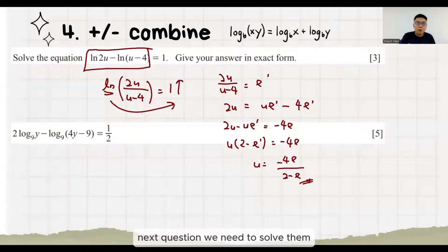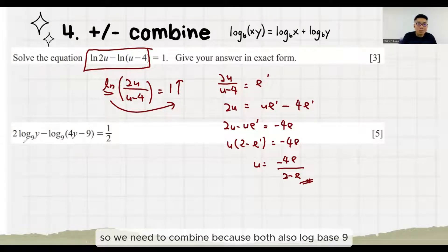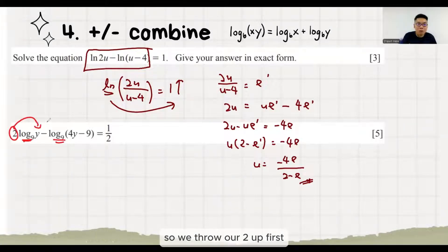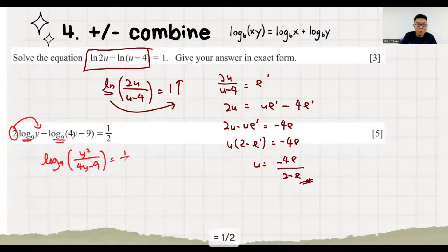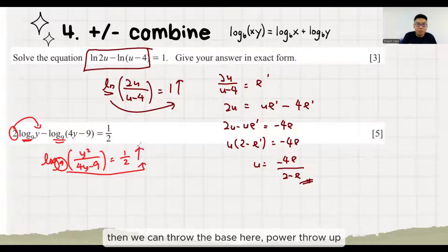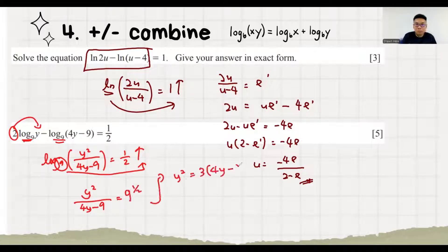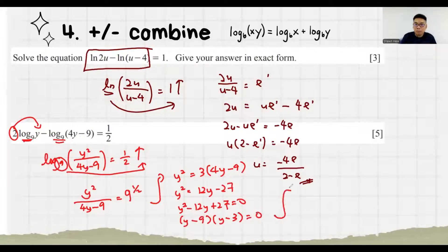Next question, we need to solve them. We need to combine because both are log base 9. So we throw our two up first. Then we can combine: Y squared over 4Y minus 9 equals to half. Then we can throw the base here. Power throws up.